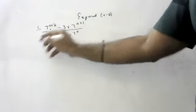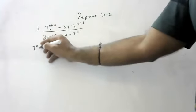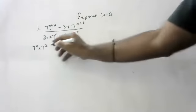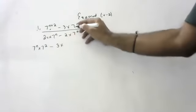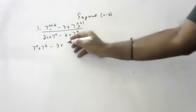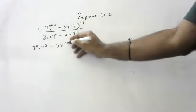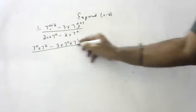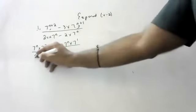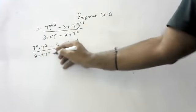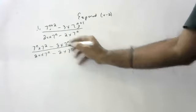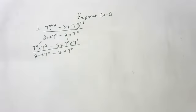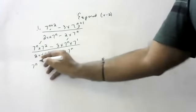This we can write as 7 to the power n into 7 to the power 2, minus 3 into 7 to the power n into 7 to the power 1, divided by 20 into 7 to the power n, minus 2 into 7 to the power n. What is common in these both terms, children? 7 to the power n.